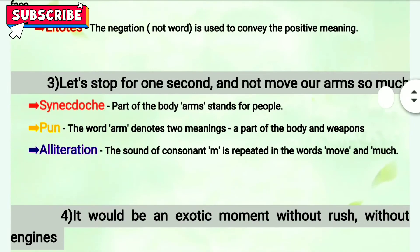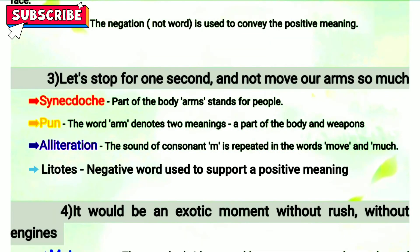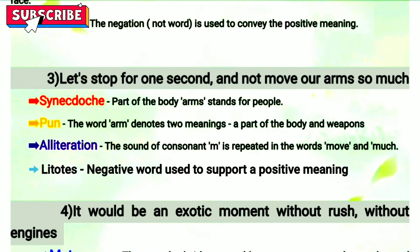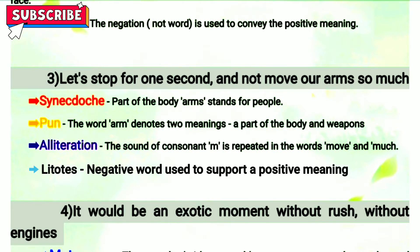Third line: 'Let's stop for one second and not move our arms so much.' First is synecdoche, because 'arms,' a part of the body, is used to represent a whole person. Next is pun — that is a play on words. 'Arms' has two meanings: the arms of a person, and the second meaning is weapons. One word is used to convey two meanings, so that is pun. The next figure of speech is alliteration — the consonant M is repeated in 'move' and 'much.'